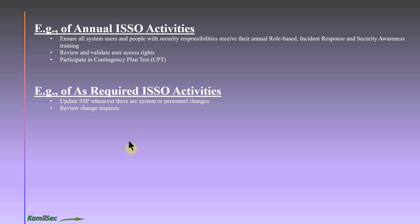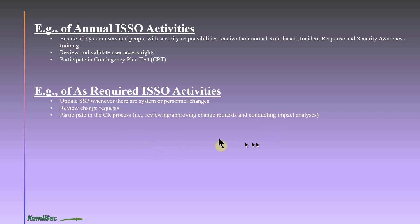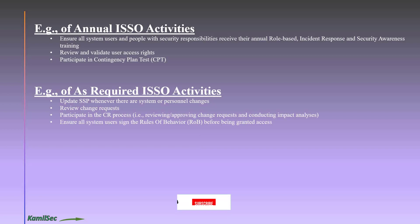Review change requests submitted through the CCB process — there is a portion where the ISSO should be reviewing and approving. Participate in the change request process by reviewing and approving change requests and conducting security impact analyses on proposed changes. Also ensure that all system users sign the Rules of Behavior (ROB) before being granted access to the system, and keep those records in a retrievable location for assessment purposes.